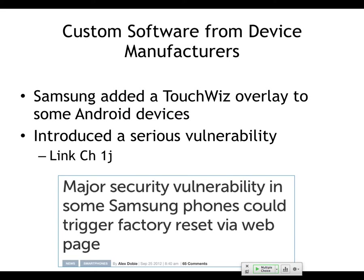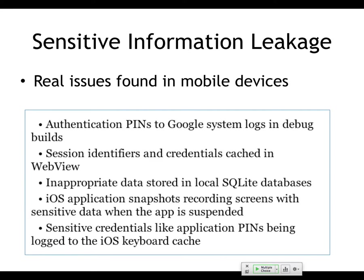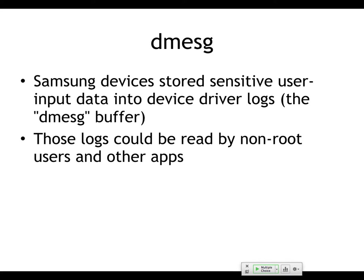Manufacturers often add extra things. Samsung added a TouchWiz overlay to Android which created a serious vulnerability — you could have a web page trigger a factory reset. Other devices make other errors: one would send your authenticated PIN into the log, another would cache credentials in WebView so they could be stolen, and another stored data in local SQLite databases. iOS, in order to make an entertaining graphic when you close a page, would take a snapshot of that page and modify the image — those images could have a picture of whatever you typed, which could be stolen. Samsung devices stored user data in a D-Message buffer that could be read by any other app.